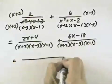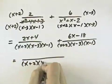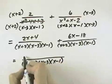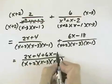So that we can combine those, so that our denominator is the x plus 2, the x minus 3, and the x minus 1. And our numerator is 2x plus 4, plus 6x minus 18.